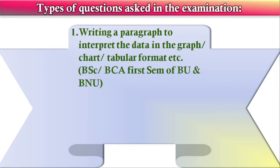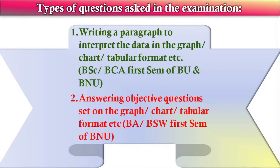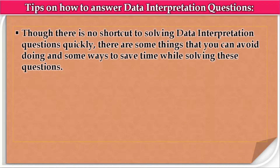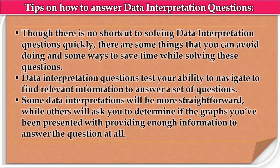Now let's look at the types of questions asked in the examination. The first kind of question asked in BSA or BCA first semester at Bangalore North University and Bangalore University is writing a paragraph to interpret data in a graph, chart, or tabular format. The second type, also tested in BA or BSW first semester, is answering objective type questions set on a graph, chart, or tabular format. Data interpretation questions test your ability to navigate and find relevant information, ranging from straightforward to complex.